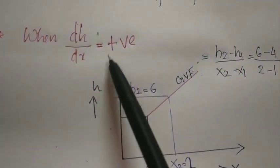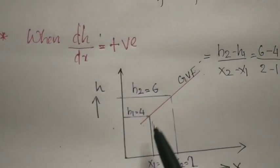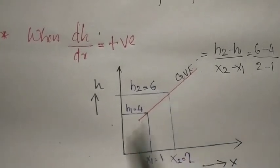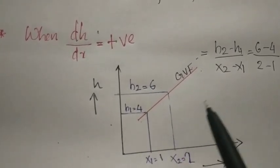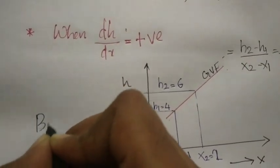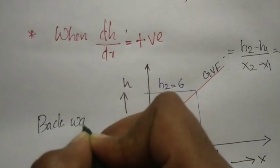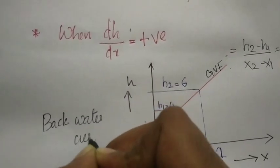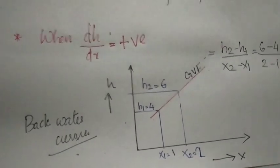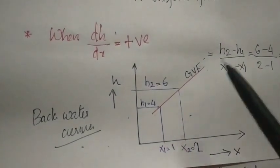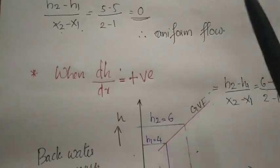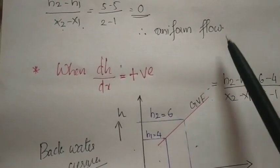Therefore, when dh/dx is positive, the depth of the liquid surface increases in the direction of flow, and this profile of the water surface is called the backwater curve. When dh/dx equals zero, the profile represents uniform flow.